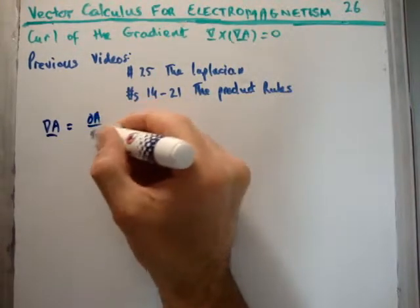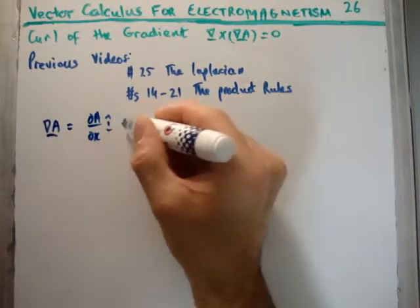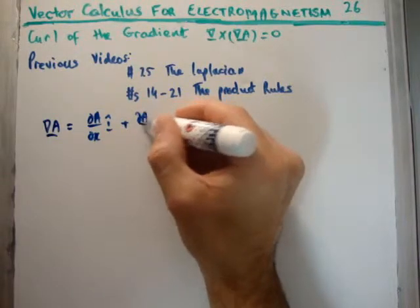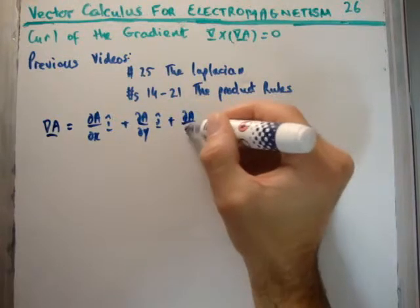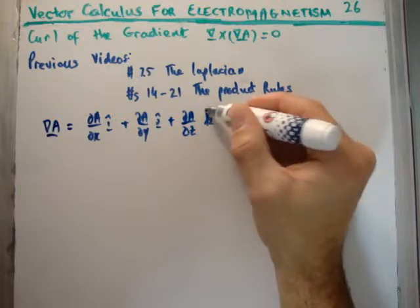So it's going to be del A del X in the i hat unit vector direction, plus del A del Y in the j hat unit vector direction, and del A del Z in the k hat unit vector direction.